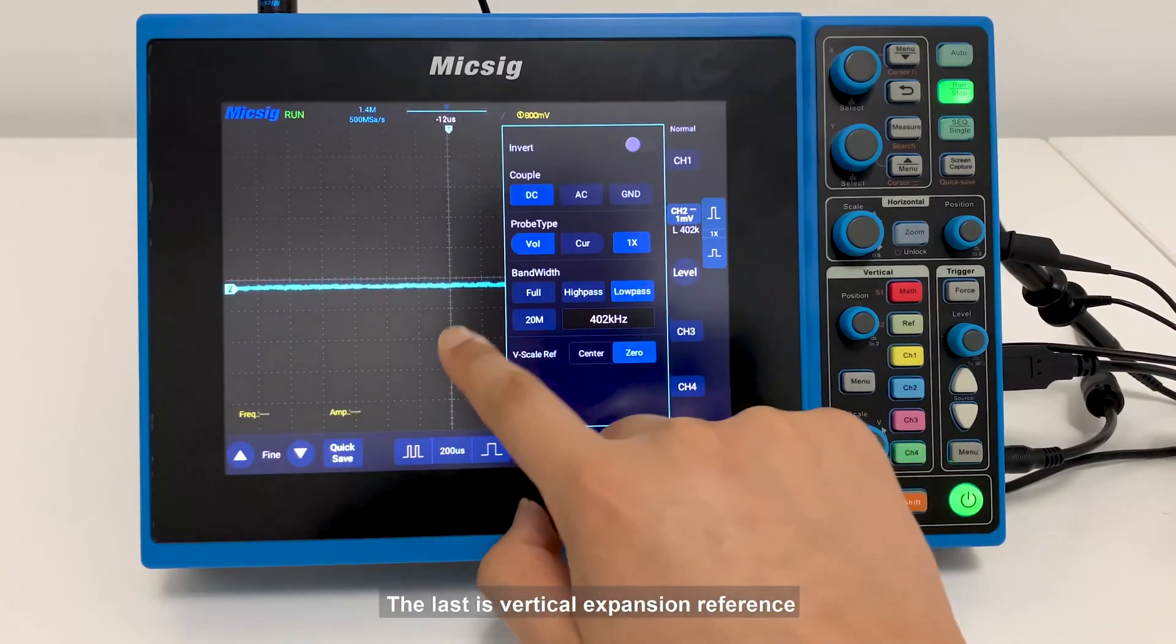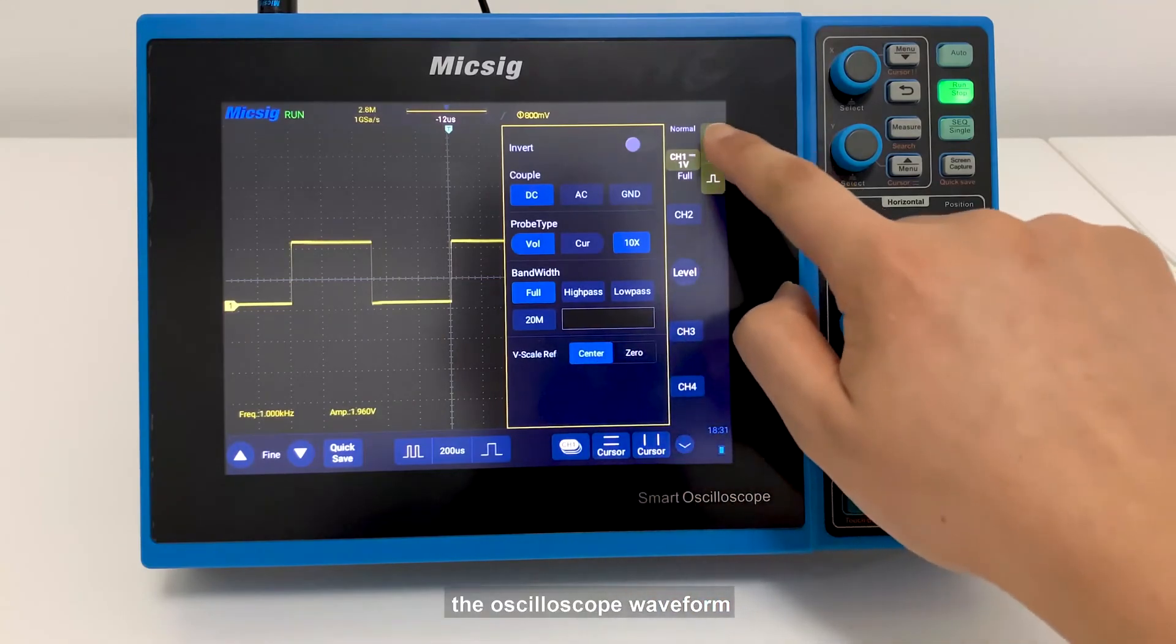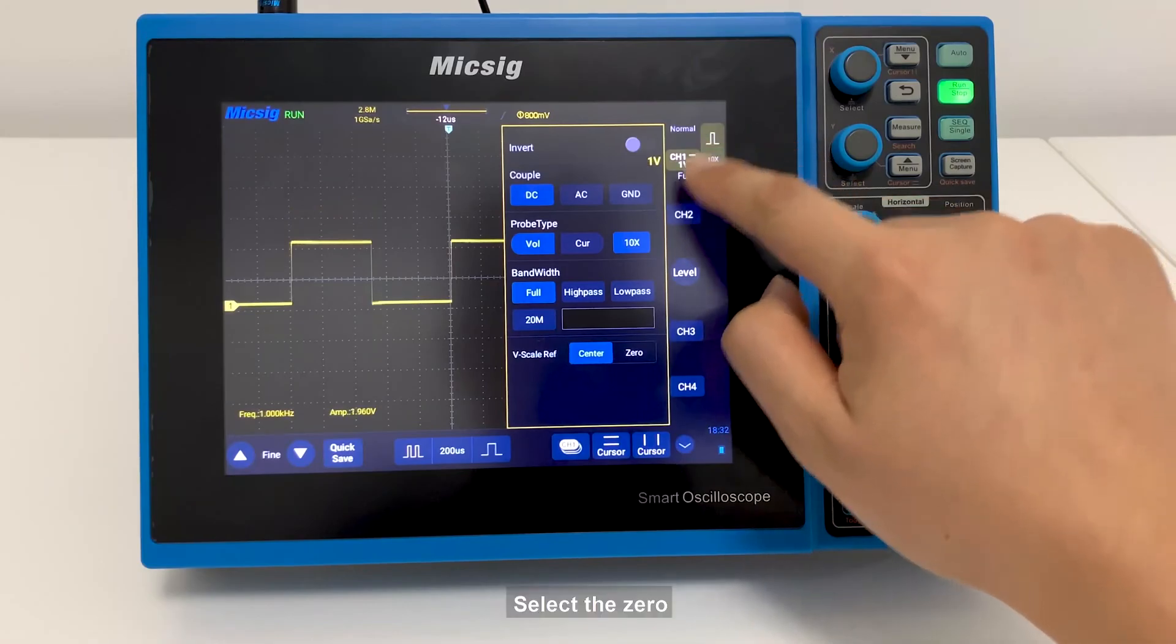The last is vertical expansion reference. Click the center, the oscilloscope waveform will be expanded with the screen center as a reference. Select the zero, the oscilloscope waveform is expanded with the waveform zero point as a reference.